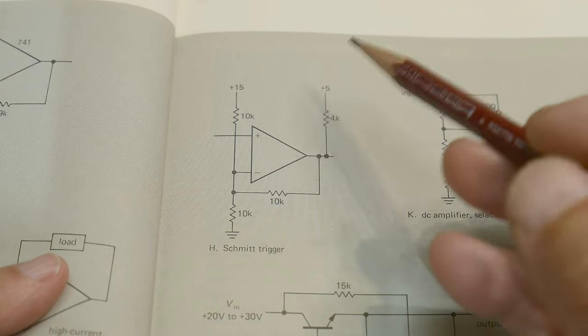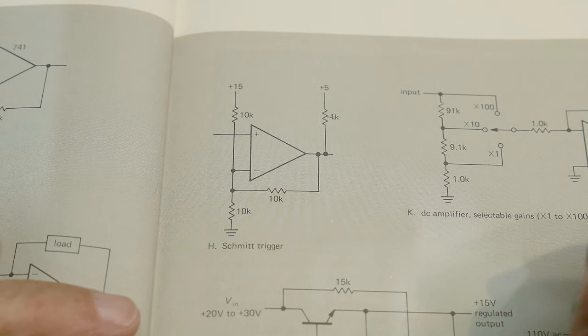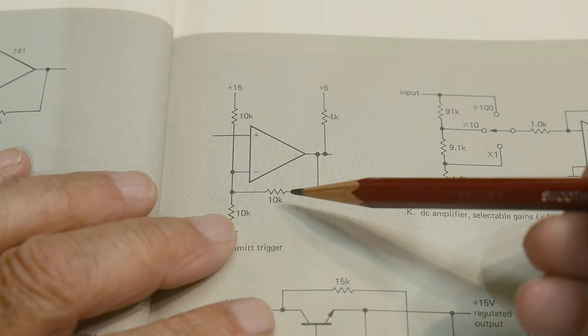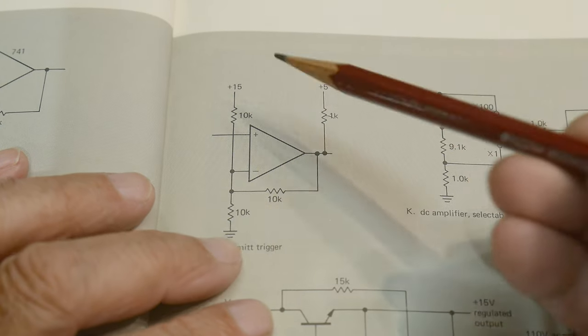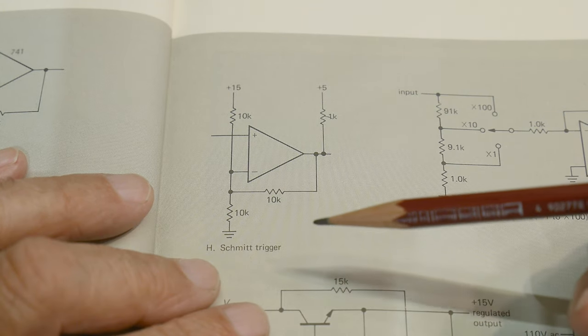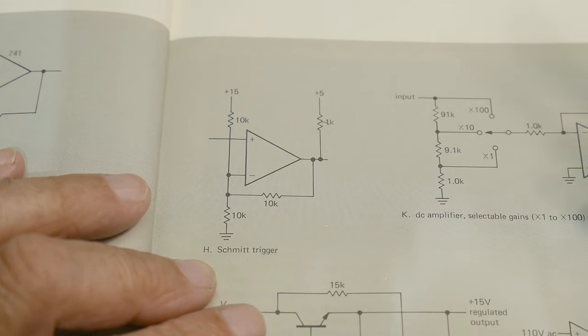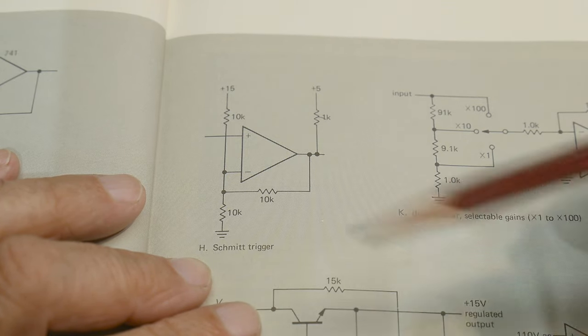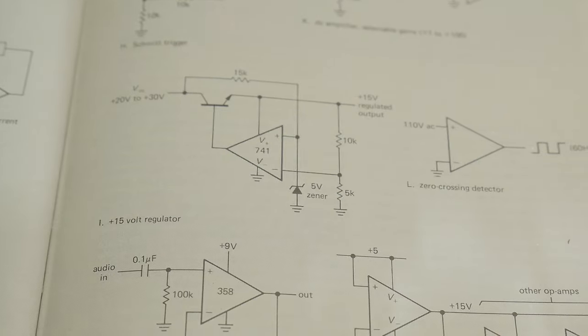Schmidt trigger. Oh geez. I've actually done a video on these and there's a trick to 10k, 10k, 10k. That's right. Plus is right. 15 volts here, 5 volts out. 1k. I don't know. I don't know what's wrong with that one. You tell me.